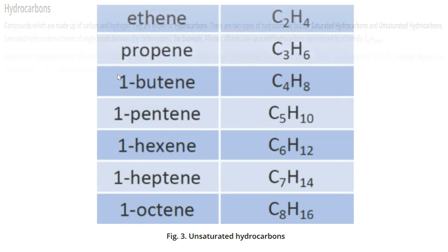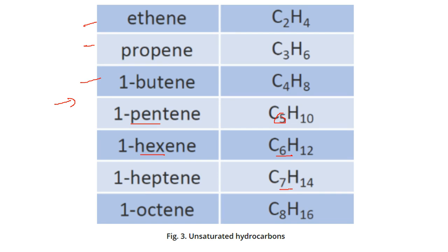The names are given like this: ethene, ethane, propene, and butene. After that, because this is five, it's penta, so pentene. Six is hexa, hexene. Seven is hepta, heptene. Eight is octa, octene.